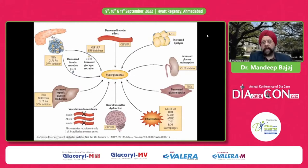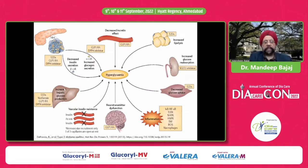When you look at type 2 diabetes, the hyperglycemia is a combination of several pathophysiological abnormalities. These include impaired insulin secretion from the beta cells, a decreased incretin effect, increased lipolysis from the adipocytes, increased glucose reabsorption, decreased glucose uptake in the muscle or insulin resistance in the muscle, increased hepatic glucose production from the liver or hepatic insulin resistance, and finally, neurotransmitter dysfunction that may contribute to increased appetite and other factors contributing to hyperglycemia.